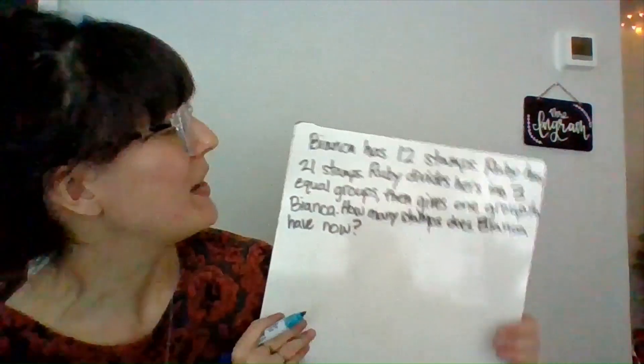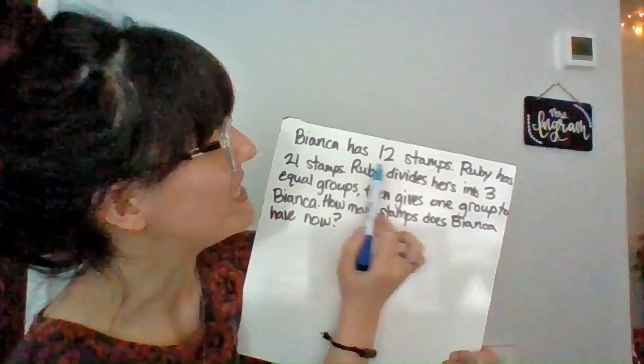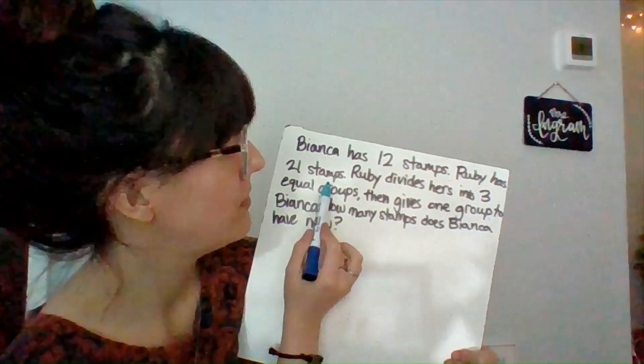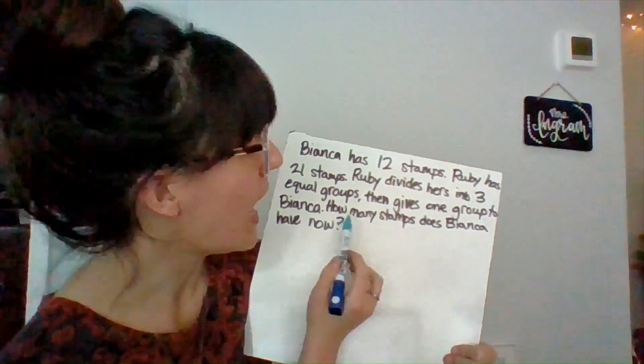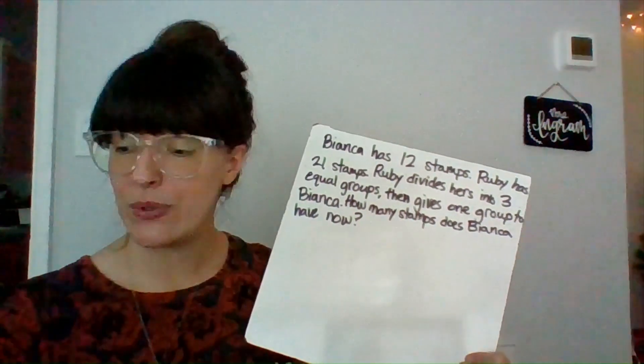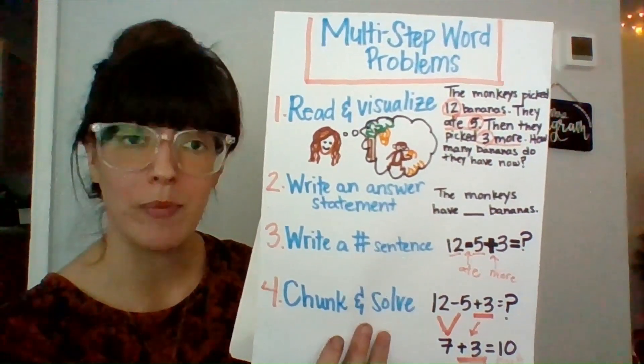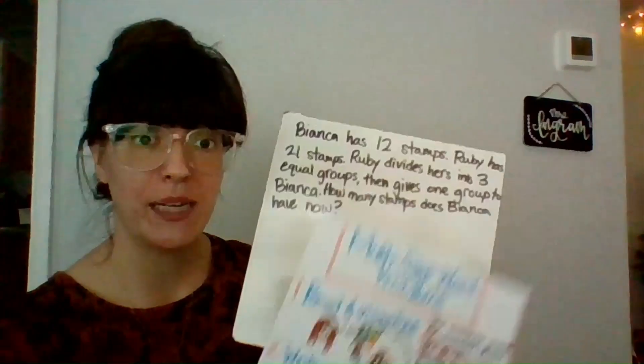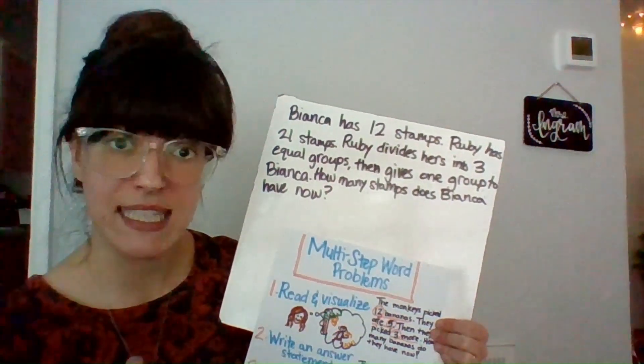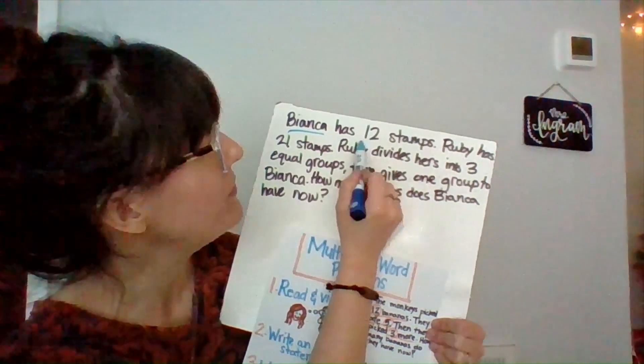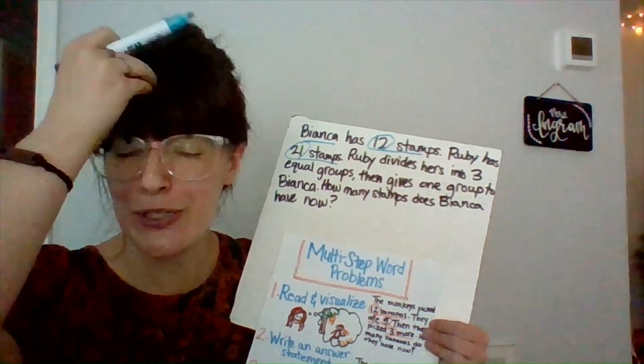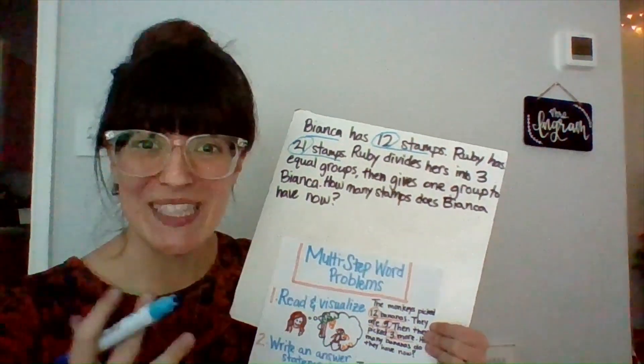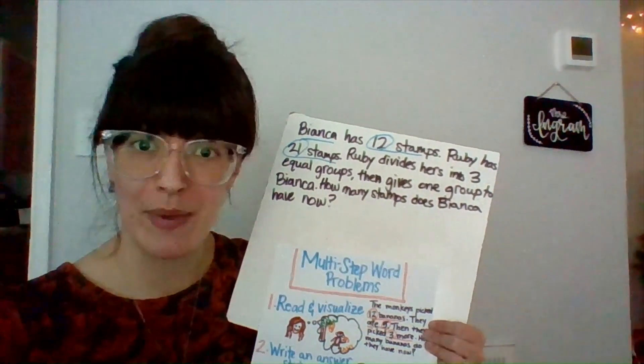Let's move on to our second example. All right, here we go. Bianca has 12 stamps. Ruby has 21 stamps. Ruby divides hers into three equal groups, and then gives one group to Bianca. How many stamps does Bianca have now? All right, so step one, I'm going to read and visualize my problem. I'm going to think, what are we talking about here? Well, in this problem, I'm talking about stamps and collecting stamps. I see that Bianca has 12 stamps. Ruby has 21. So as I'm picturing this, I'm going to be picturing Ruby and Bianca, both with stamps, and Ruby is going to be putting hers into groups. So that's the picture that I'm going to be making in my head.